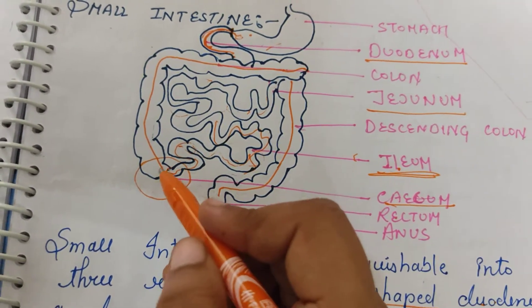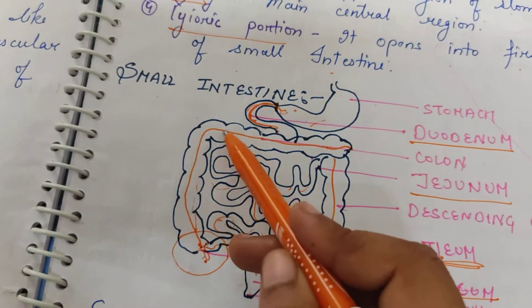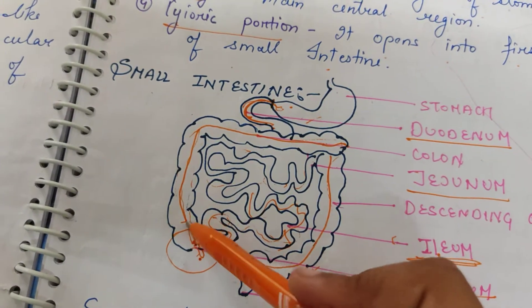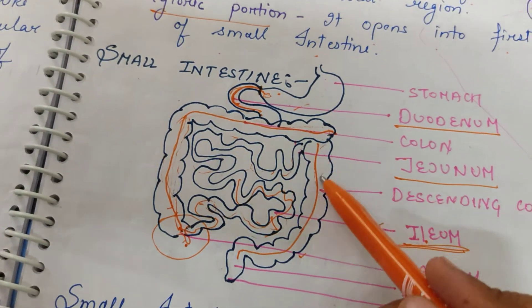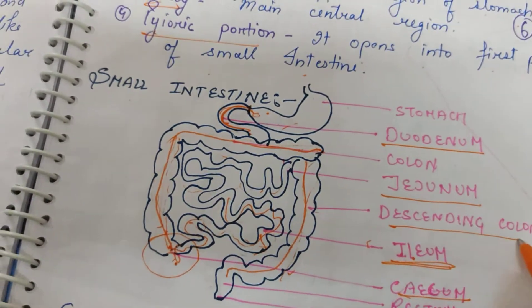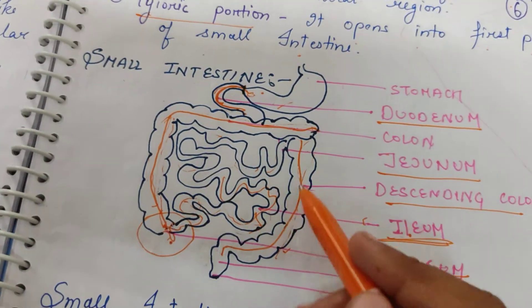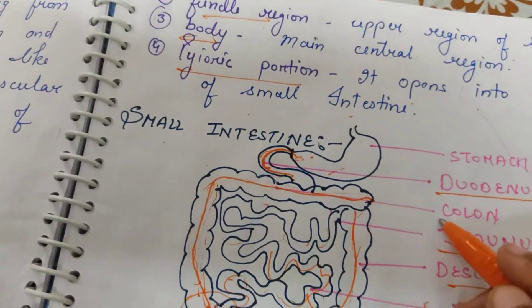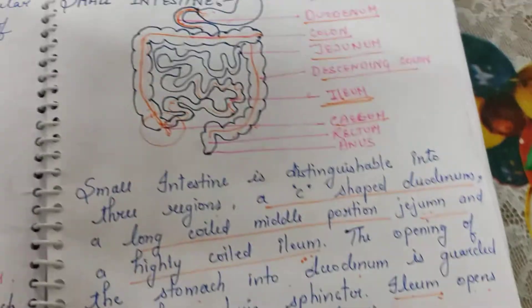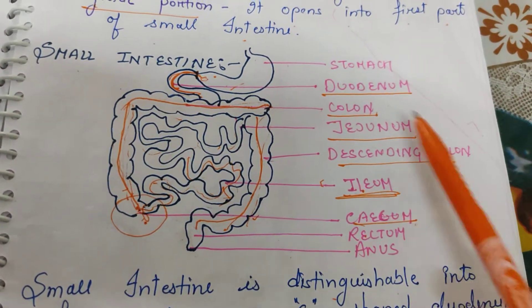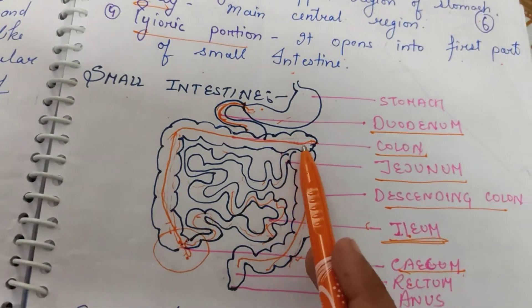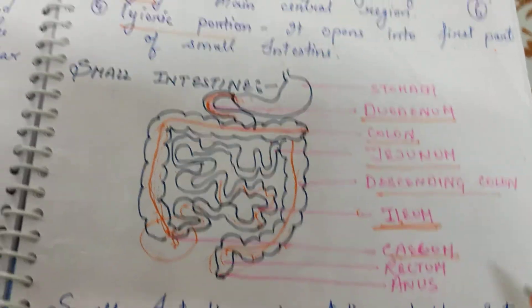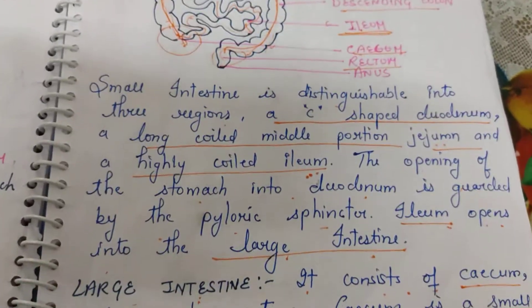After the cecum comes the colon. There is an ascending colon where it starts, and a descending colon where it finishes. After the descending colon, the last part is the rectum.